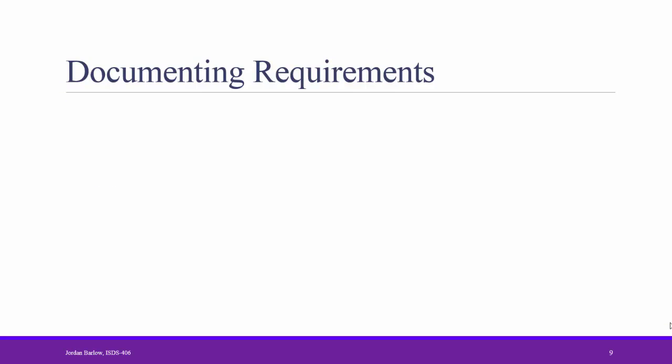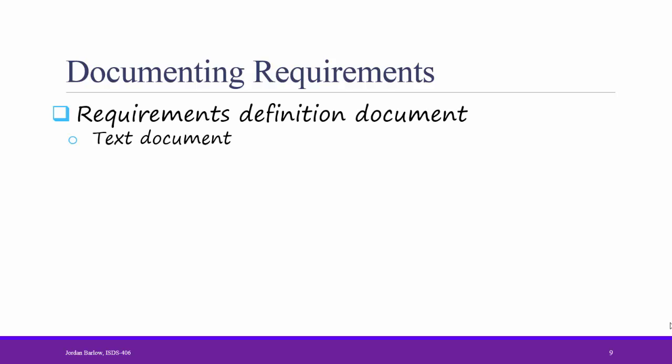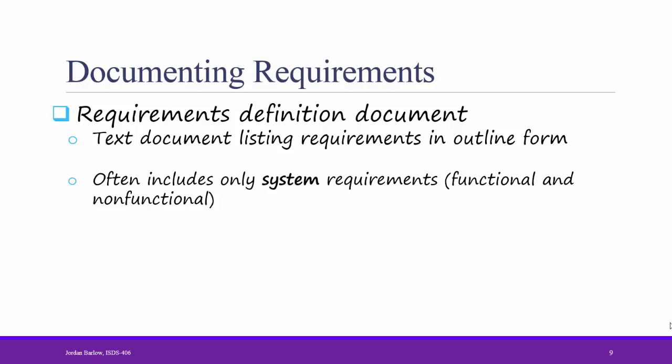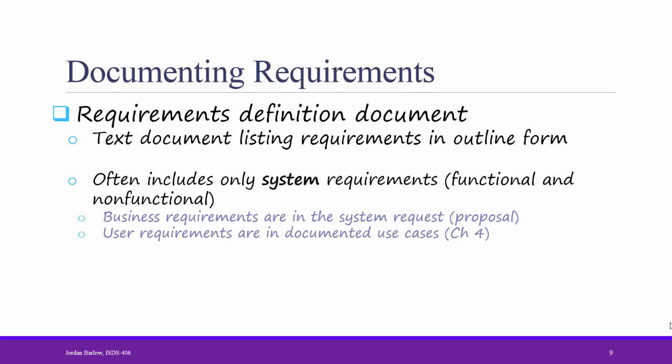Now that we understand what system requirements are and the various categories of them, let's talk about how we document them. The main place to document system requirements is in a document called the Requirements Definition Document. This is a text document that lists requirements in outline form. It often includes only system requirements — functional and non-functional. The business requirements are in the system request that we completed earlier, and the user requirements are documented through use cases, which we'll talk about next week. The Requirements Definition Document becomes a central place where designers, analysts, programmers, users, or anybody else can check to make sure that we're all on the same page about what the system should be able to do for us and what characteristics our system has.